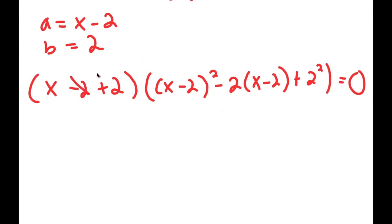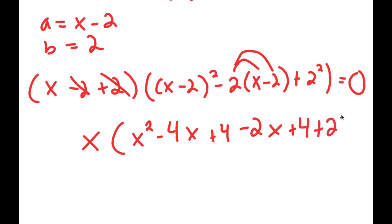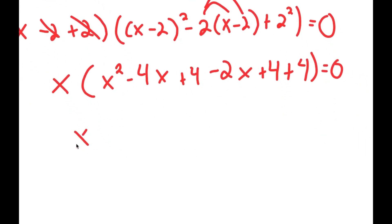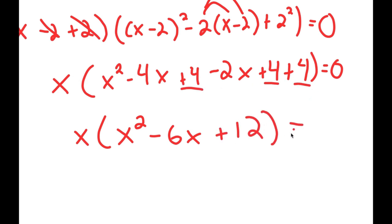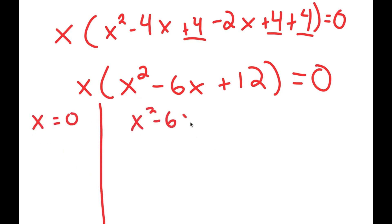We can simplify this: negative 2 and positive 2 cancel, leaving x times x minus 2 squared. Expanding: x minus 2 squared is x squared minus 4x plus 4; distributing negative 2 times x minus 2 gives negative 2x plus 4; and 2 squared is 4. Inside the parentheses: x squared minus 4x minus 2x plus 4 plus 4 plus 4 simplifies to x squared minus 6x plus 12. This equals 0. This gives two equations: x equals 0, and x squared minus 6x plus 12 equals 0.